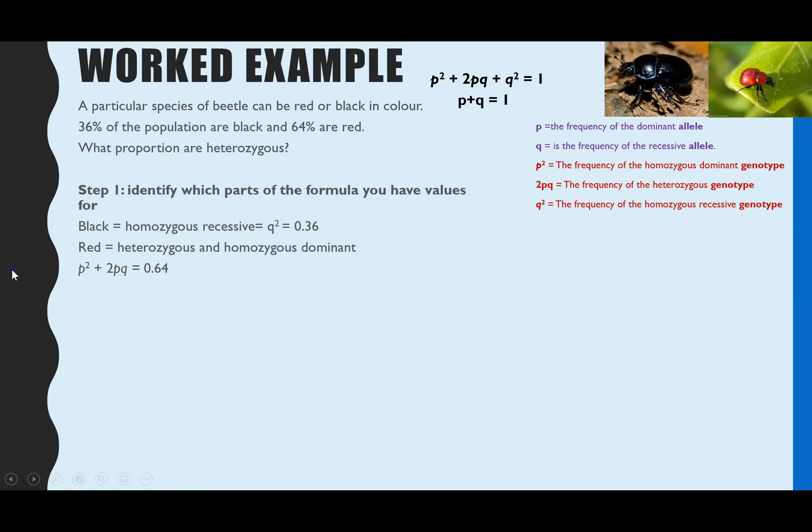This time round, we actually have two different options of what we could use. Step two, though, is always work out P and Q. And from the information we have, it's going to be much easier to work out P and Q if we use the value for Q squared. So that's the one I'm going to use. I'm not going to use any of this information for the red beetles. I'm just going to use the information for the recessive black beetles.